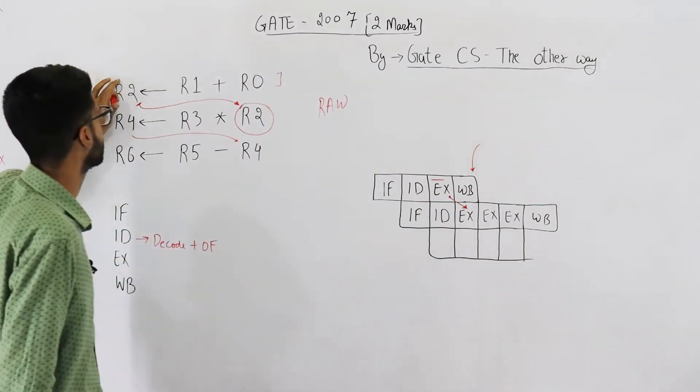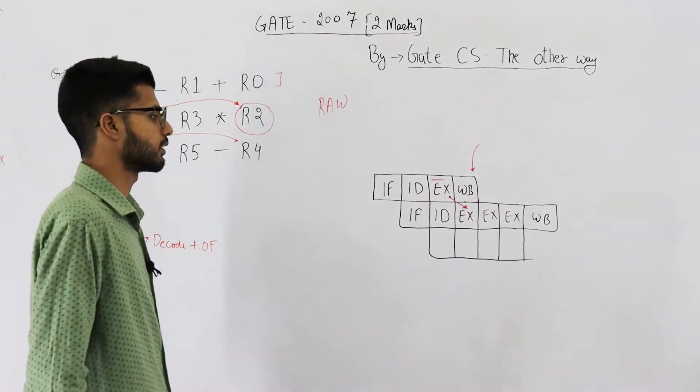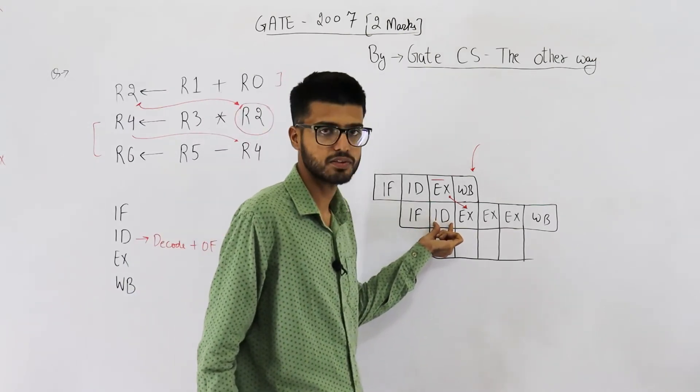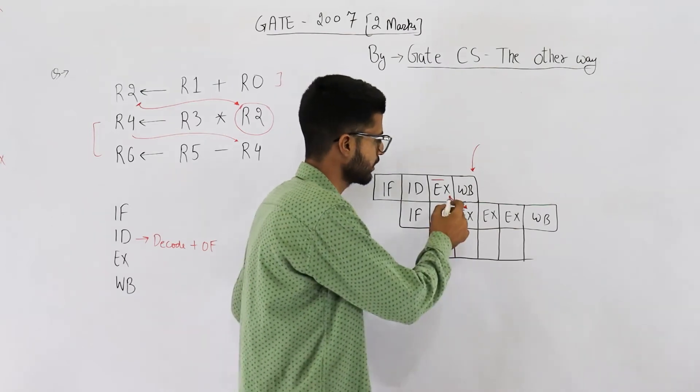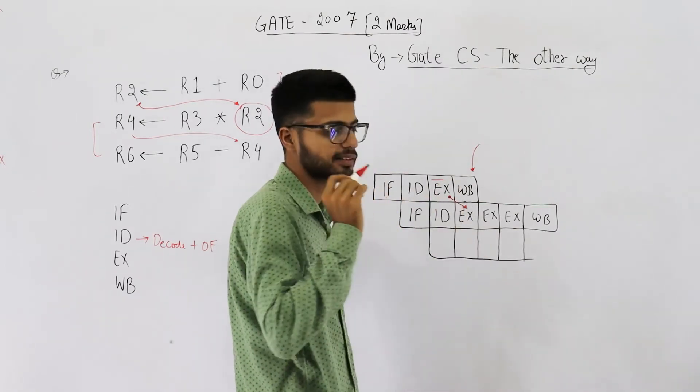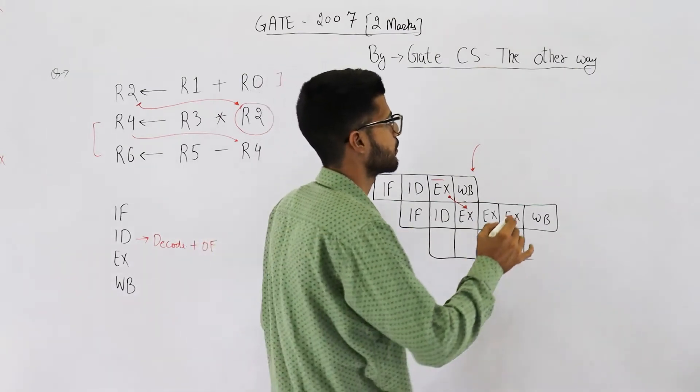This value R2 will be fetched by ID, but that would be the wrong value because only after WB the correct value is updated into R2. But hardware will overwrite that value. Whatever ID has fetched will be overwritten with the value that we get from execute stage.